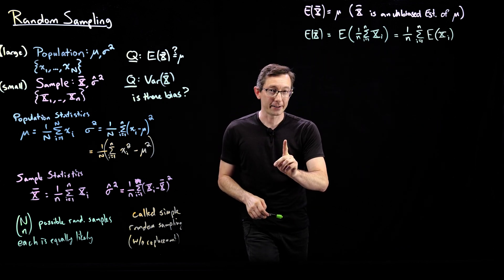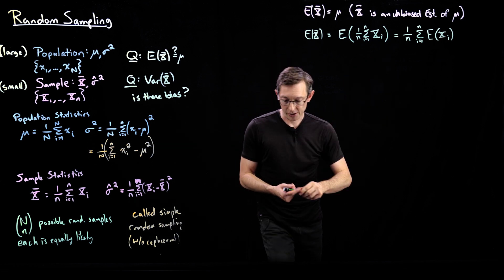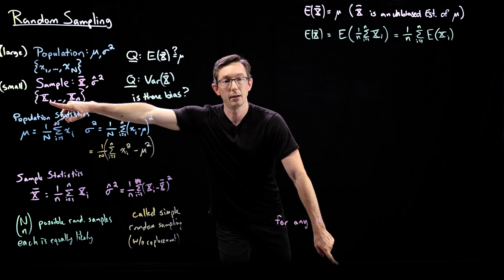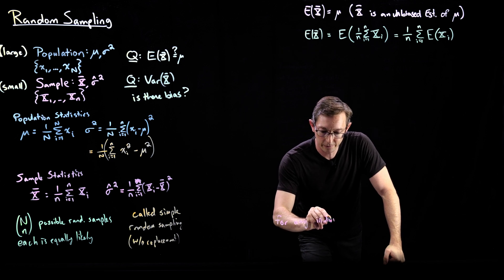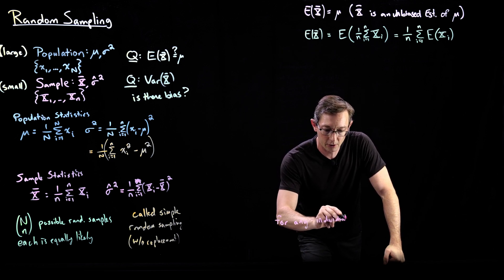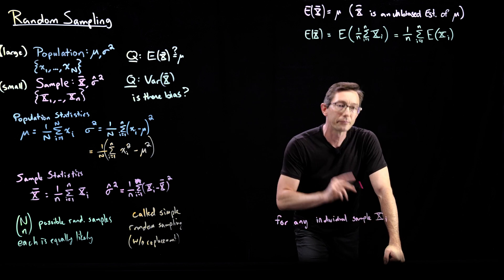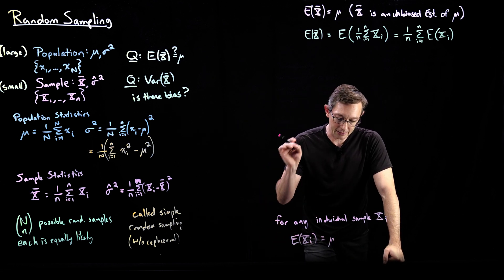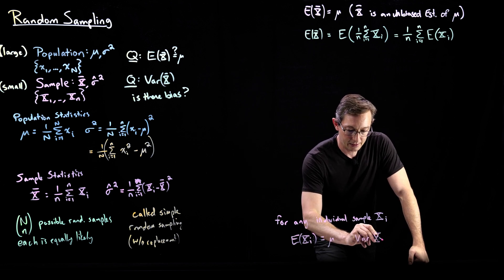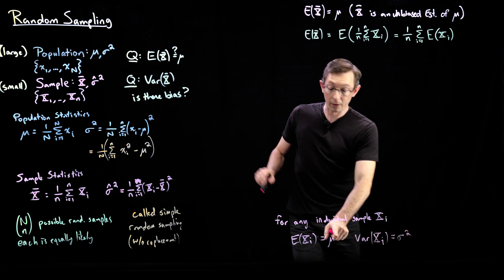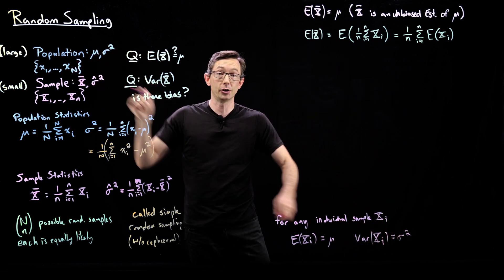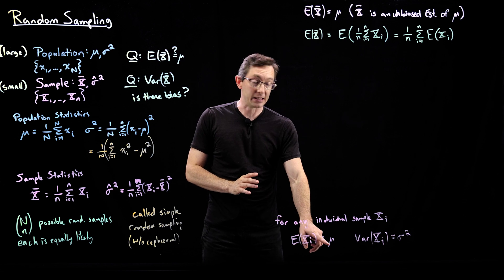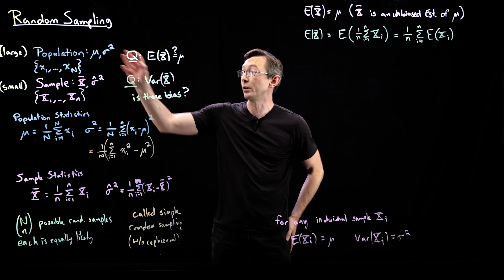Here's a really important fact: for any individual sample X_i, the expected value of X_i is equal to mu, and the variance of X_i is equal to sigma squared. This is super important. Any one of these individual samples has expected value mu and variance sigma squared, where those are the population values.